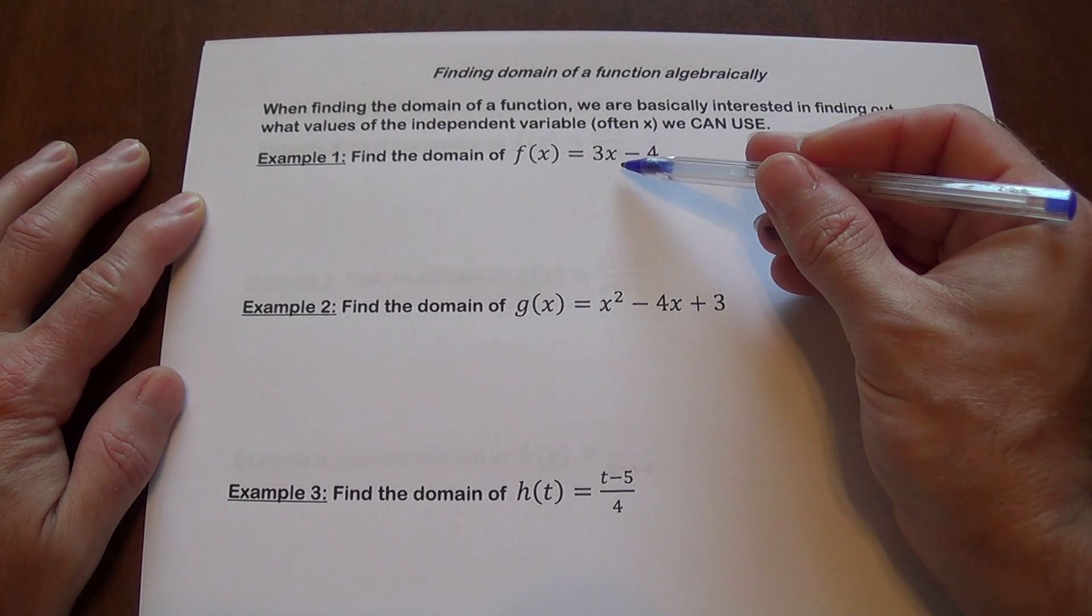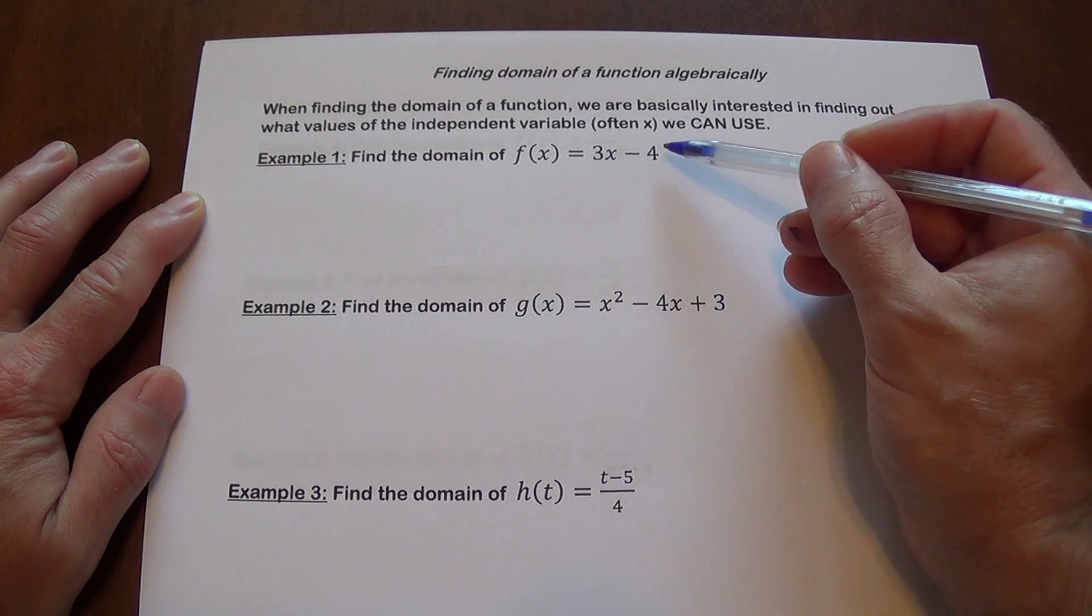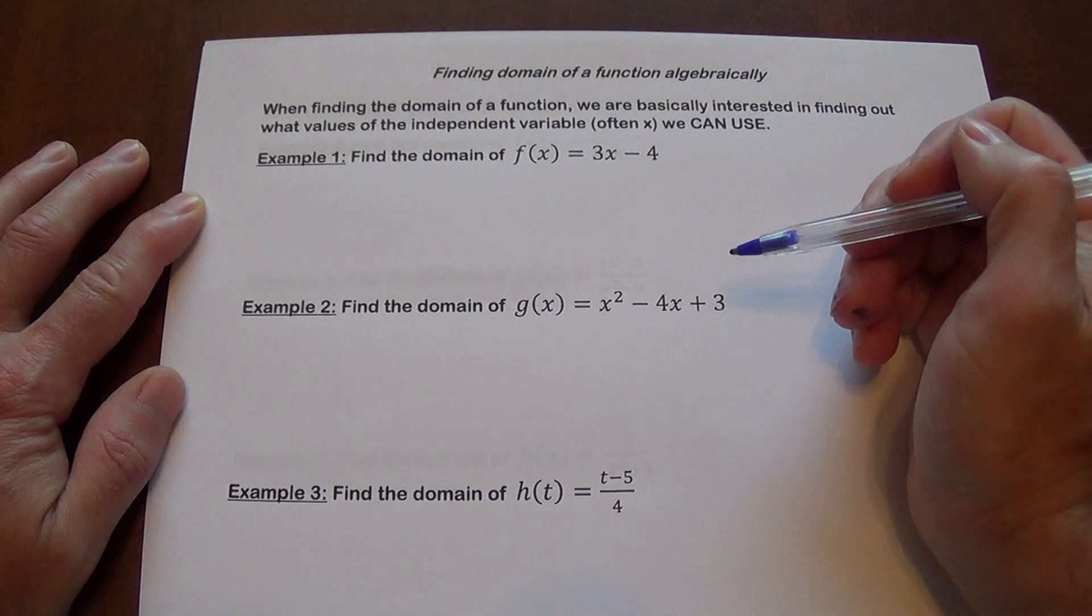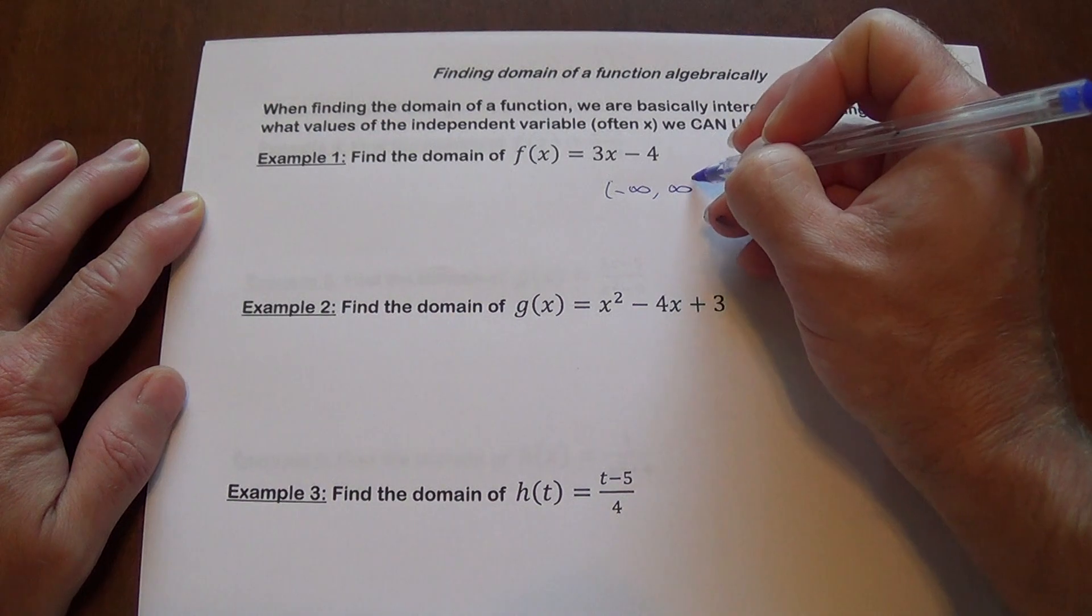And if you look at this, absolutely, you can make x anything you want. You can always take a number, multiply it by 3 and subtract 4, it will give you something. So the domain here is going to be all real numbers since you can use any number.